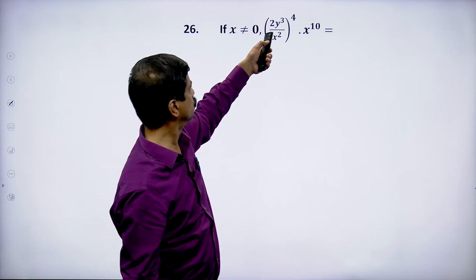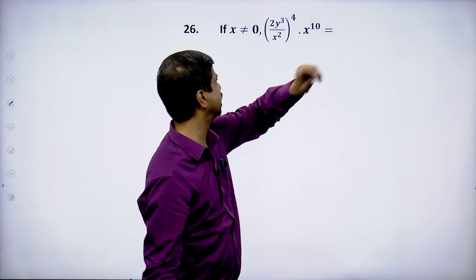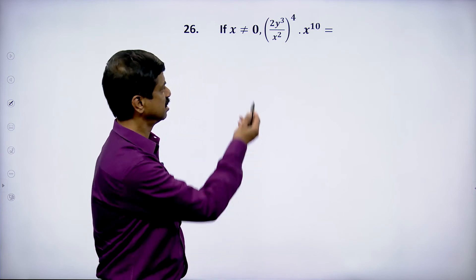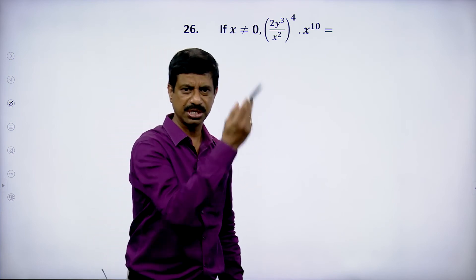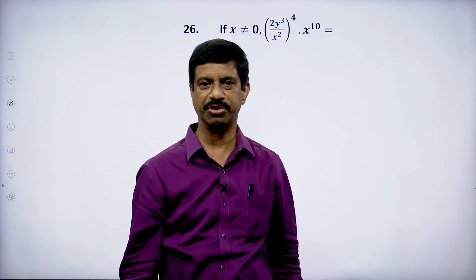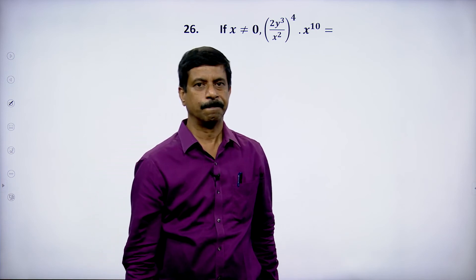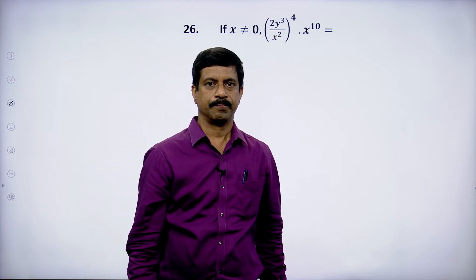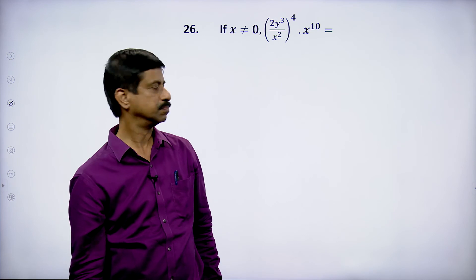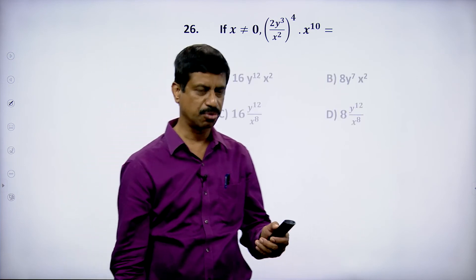Next: (2y³/x²)^4 · x^10 — simplify this. I think you can complete this as homework.